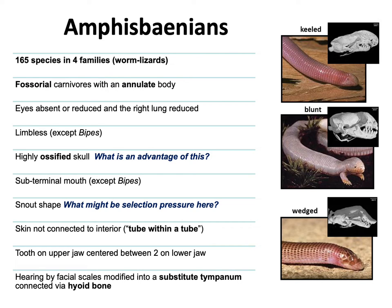Why would that be an advantage? They're living underground without limbs, which means they're digging through the ground with their head — having an ossified skull helps with that. Another bizarre thing: their mouth is not at the end of their rostrum but underneath, like a ray or skate, so the mouth is kind of under the head. That makes sense because you don't want to move through dirt with your mouth full. The exception is Bipes, the least fossorial among them, which may explain why they still have forearms.